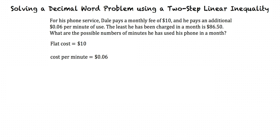So our total cost is just the cost for the minutes used plus the flat cost. We can put our flat cost and our cost for all the minutes used together in order to make an equation for the total cost based on minutes used. Now we look to set up our inequality.